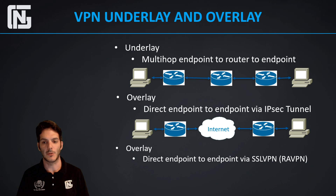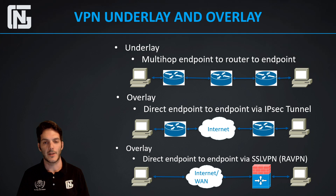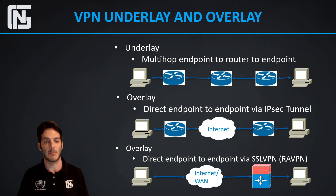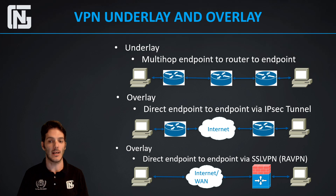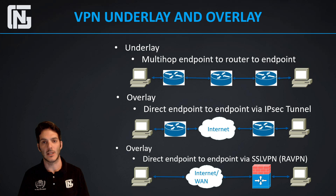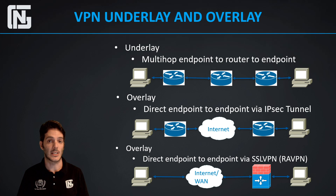The last overlay type is direct endpoint-to-endpoint via SSL VPN, where a PC connects over a WAN or internet connection to a firewall running an SSL VPN service. For instance, on a Cisco ASA you have the web VPN feature, or the client-based AnyConnect. You fire up AnyConnect on the PC, point it toward the firewall, form a secure connection via SSL or IPsec, and pass traffic through the firewall to a PC behind it via the remote access VPN.